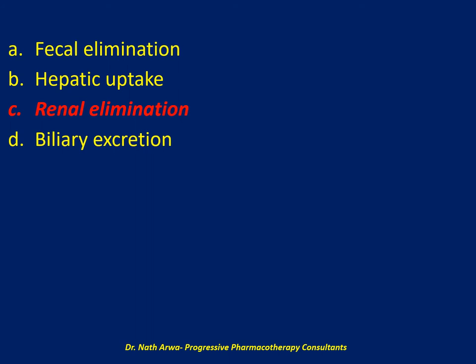Probenecid is also used as a uricosuric because it can inhibit renal tubular secretion of uric acid and is a treatment option in patients with hyperuricemia with gout.